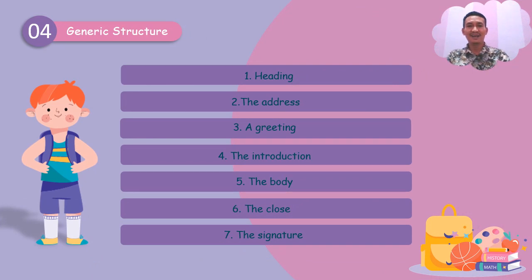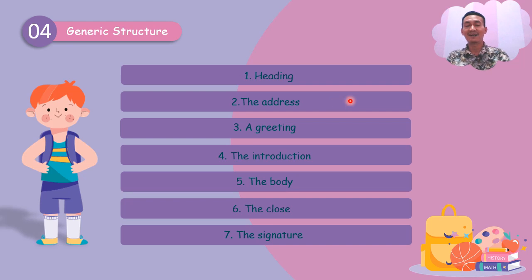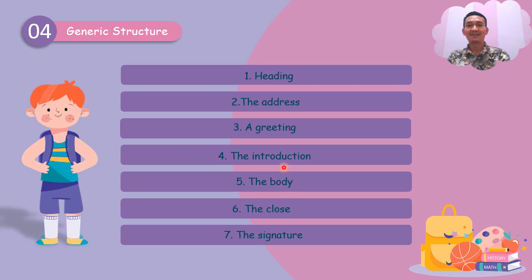Next is the generic structure. Dari penjelasan sebelumnya kamu bisa membayangkan bahwa struktur dasar dari sebuah teks lamaran kerja terdiri dari: heading, kemudian the address — alamat yang kamu tuju beserta alamatnya; the greeting atau salutation — salam pembuka; introduction — kalimat pembuka; the body — yang dibagi menjadi pembuka, bagian tengah, dan penutup; close — penutup; dan signature — tanda tangan kamu.